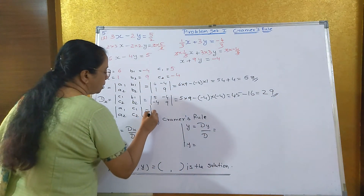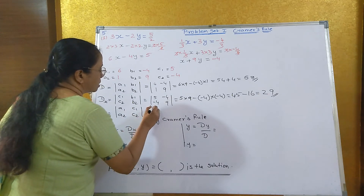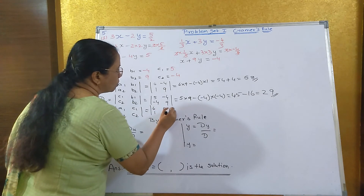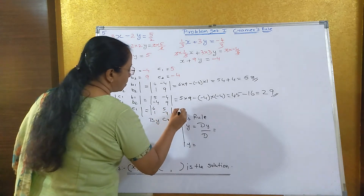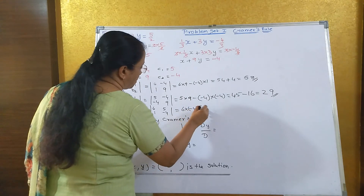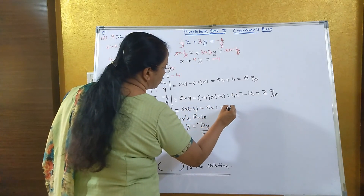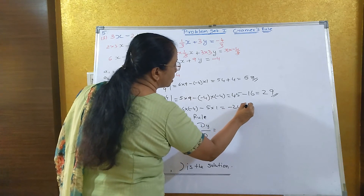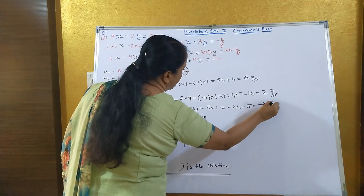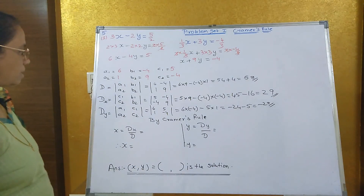Now find Dy. Dy uses A1, A2 and C1, C2: A1 = 6, A2 = 1, C1 = 5, C2 = minus 4. Cross multiply: 6 into minus 4 minus 5 into 1, that is minus 24 minus 5, which equals minus 29. So we now have all three values: D = 58, Dx = 29, and Dy = minus 29.